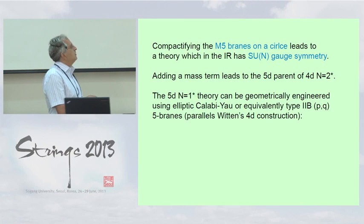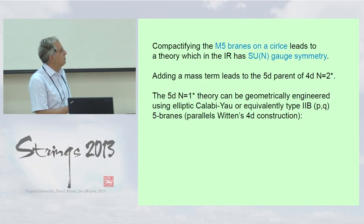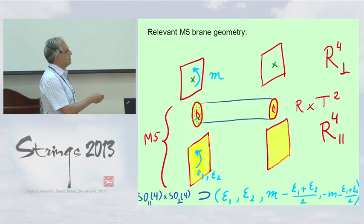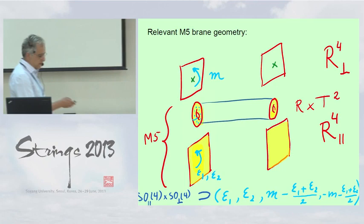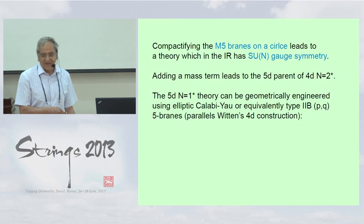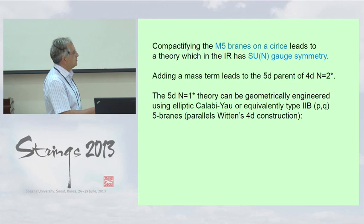As was already discussed in past talks, we know that the M5 brane wrapped on a circle leads to SU(N) gauge symmetry, and adding a mass term leads to the 5d parent of the 4d N=2* theory. This is the same mass term that appeared in the previous talk by Siok — it is geometrized by the rotation of the transverse four directions. The parameter m plays the role of the mass, and ε₁, ε₂ have to do with the rotation of the usual spacetime viewed from the Yang-Mills theory perspective. This can be viewed as the parent of the 4d N=2* theory, which I sometimes call N=2* in 5d.